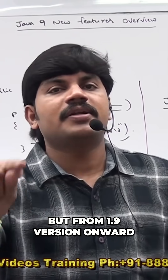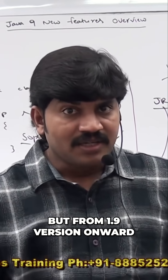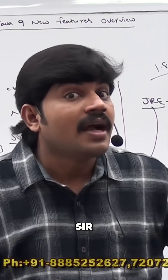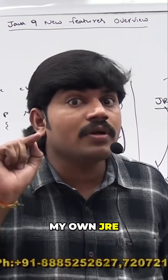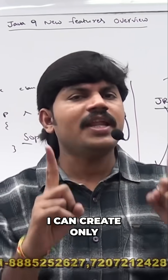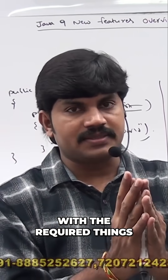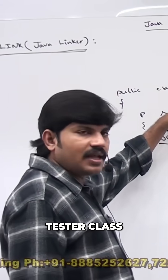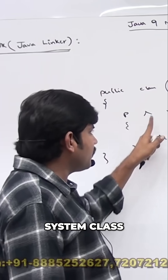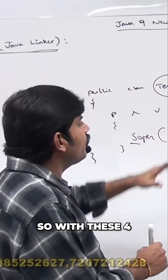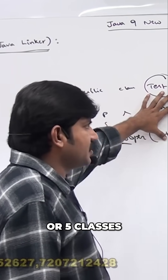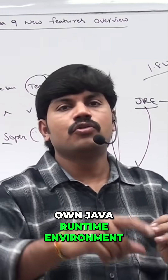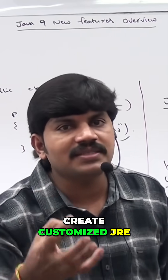From Java 1.9 version onward, I can create my own JRE with only the required things. For example, if a test class requires a Hello World program, the test class needs the system class, string class — just four or five classes. With these four or five classes, I can create my own customized Java Runtime Environment.